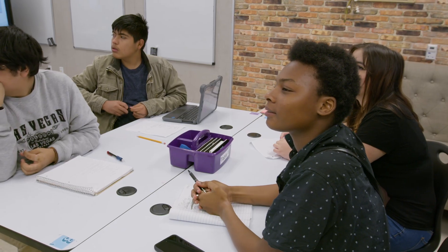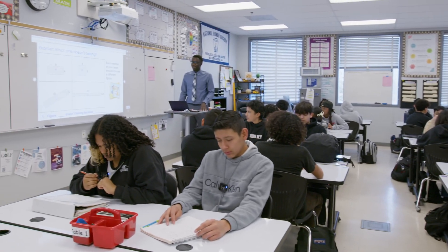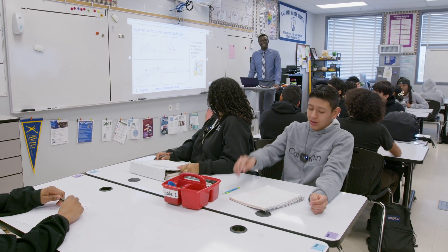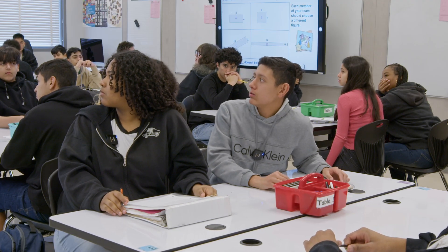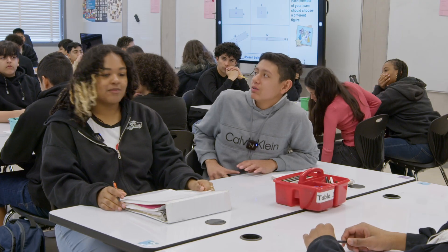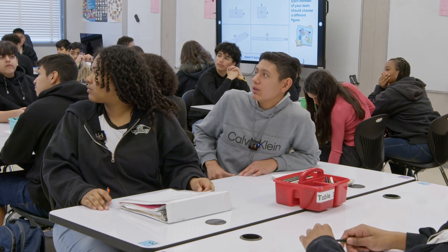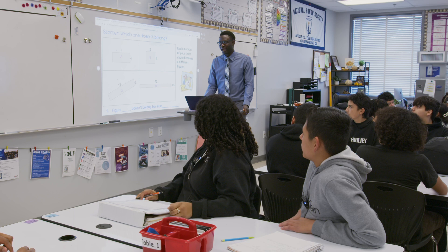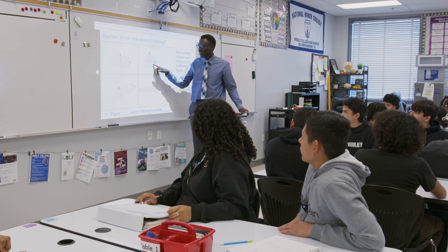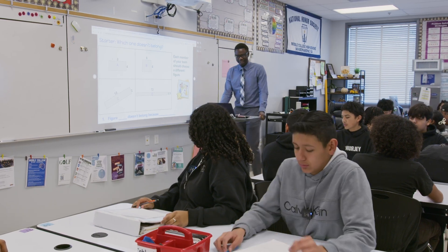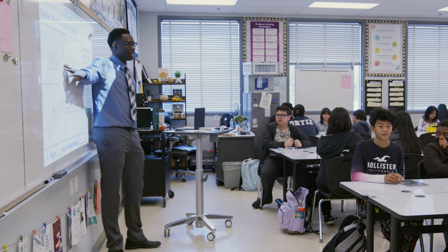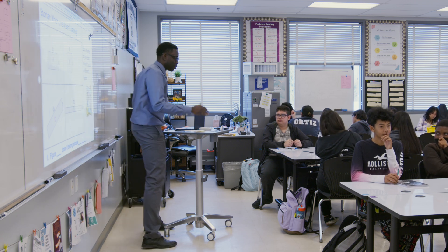I want them thinking about that right before we go into the lesson. Miguel explained that figure A doesn't belong because it's the only one that equals 32 — specifically, it's the only one with an area of 32, since eight times four is 32. All the other ones have an area of 36. That knowledge about area is going to be important for what we do today, because we're going to build on how to find the area of a rectangle.